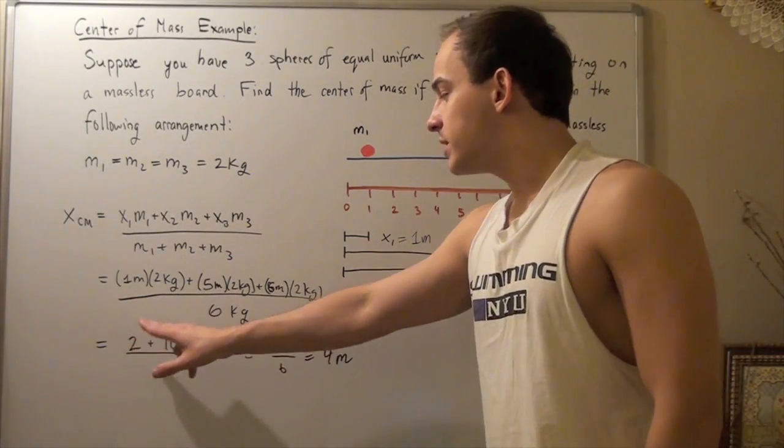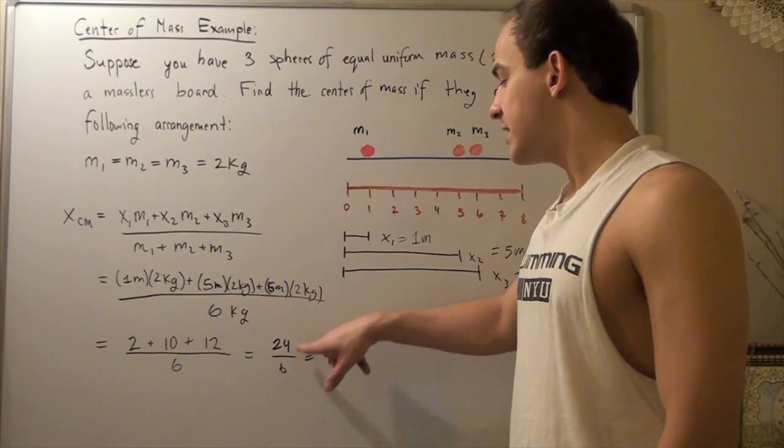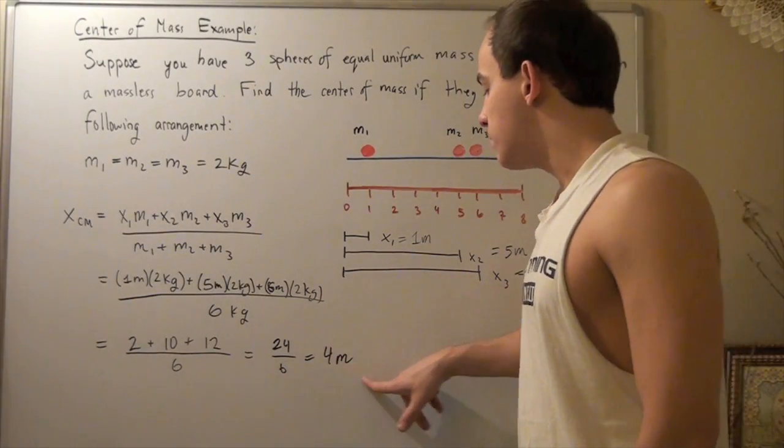So, we get two plus ten plus twelve divided by six and we get twenty-four divided by six, which is simply four meters.